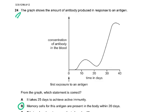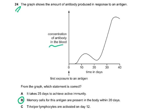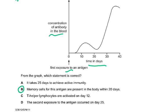Question 24: the graph shows the amount of antibody produced in response to an antigen. Concentration of antibody in the blood is shown over time in days, with first exposure on day zero. From the graph, which statement is correct? Memory cells for this antigen are present within the body within 20 days, because at the second exposure the secondary response occurs again.